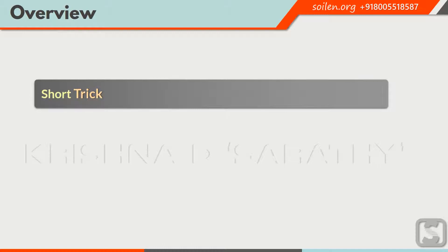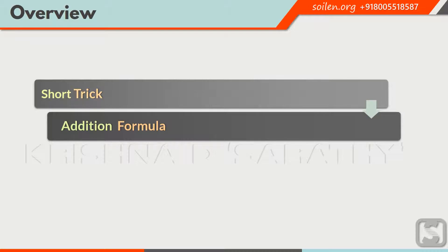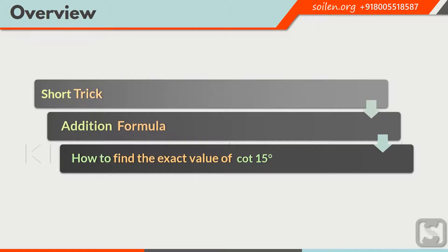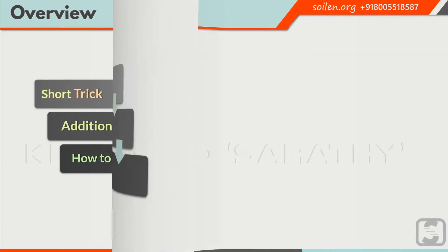In this video, we will solve a question from trigonometry. Let's take a brief overview: first, we will solve the question using a short trick; then, we will solve it using the addition formula; and at the end, we will find the exact value of cotangent of 15 degrees. So let us start.